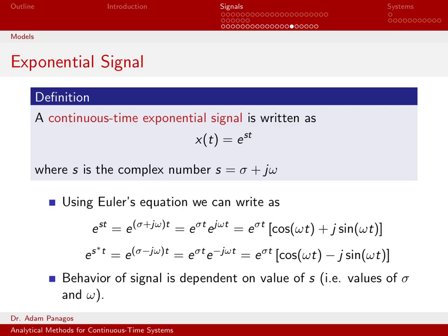If we use Euler's equation, e to the st, which is just simply e to the quantity sigma plus j omega times t, we can break that down using properties of exponentials as e to the sigma t times e to the j omega t. And here we're going to use Euler's on this part. e to the j omega t, we know by definition from Euler's equation is cosine omega t plus j sine omega t.